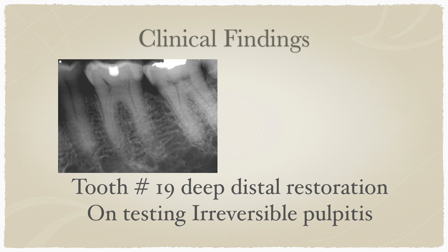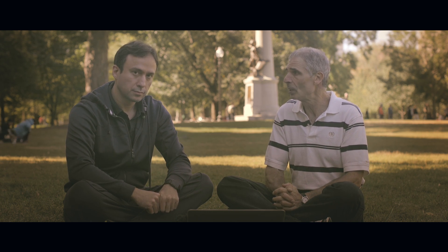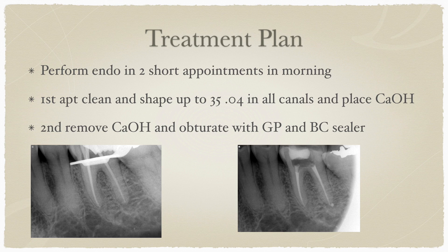On clinical exam, we found that tooth number 19 had a very deep distal restoration, and upon extensive testing we made the diagnosis of irreversible pulpitis. The apical diagnosis at this point was asymptomatic. We devised a treatment plan involving endodontic treatment to be performed in two short morning appointments. The first appointment would be to clean and shape up to a number 35.04 in all canals and place an intermedicament medication of calcium hydroxide. The second appointment would be to remove the calcium hydroxide and obturate with gutta-percha and BC sealer.